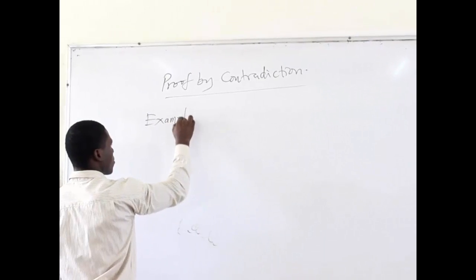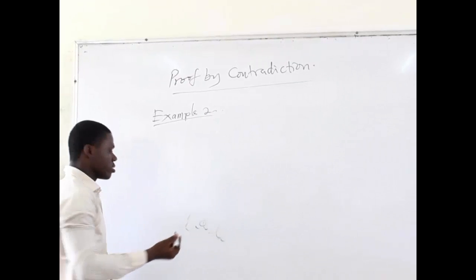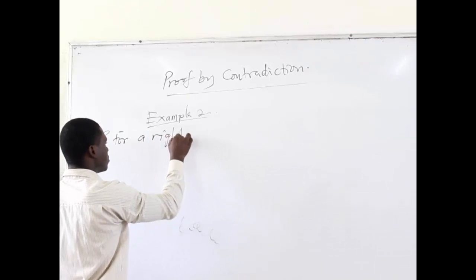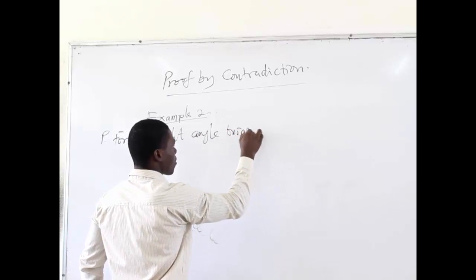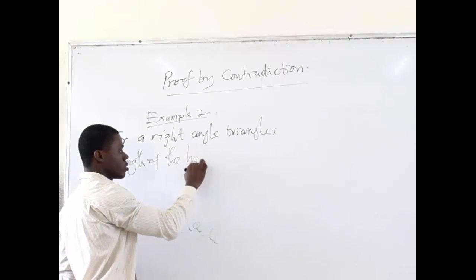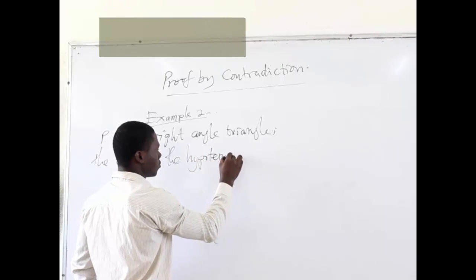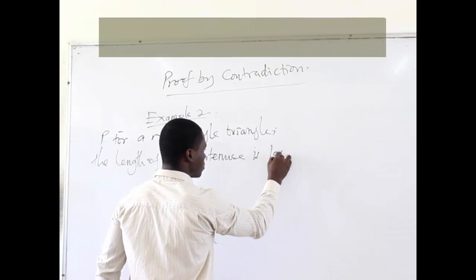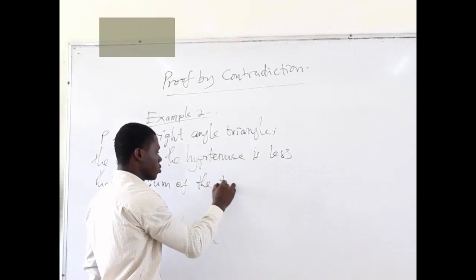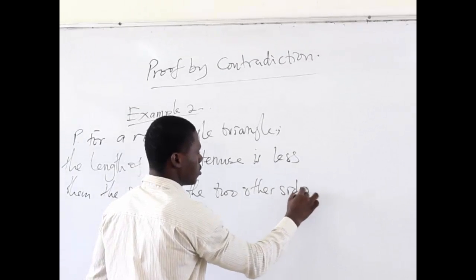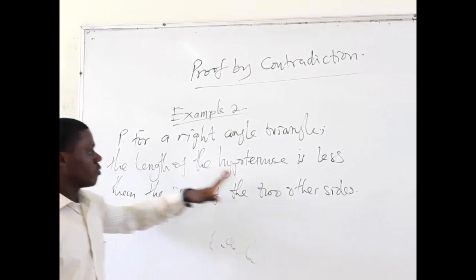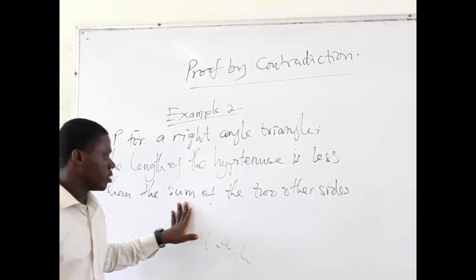We have Example 2. We want to prove that, for a right angle triangle, the length of the hypotenuse is less than the sum of the two other sides. So that's what we want to prove — for a right angle triangle, the length of the hypotenuse is always less than the sum of the two other sides.